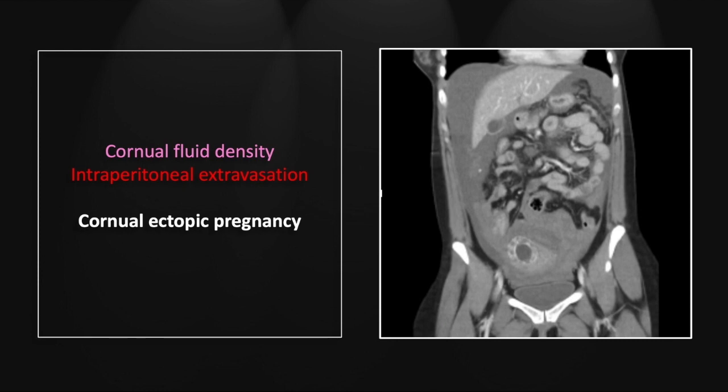That is a cornual ectopic pregnancy. Let's look at it on the coronal as well. Here again, out on the periphery of the uterus in the cornual region, you can see you lack a circumferential myometrial rim, which is the telltale sign of a cornual ectopic. And here again, the active extravasation extending all the way superiorly into the right abdomen.